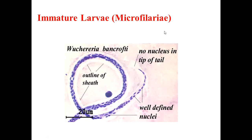These microfilaria forms can live only in lymphatics; however, in the case of Onchocerca volvulus they are present in skin. Please remember these tissue nematodes are viviparous, which means they give rise to live young developed inside the body. There is a separate male and female, whereas intestinal nematodes like Ascaris lumbricoides and Enterobius vermicularis are oviparous, meaning they produce eggs or ova.